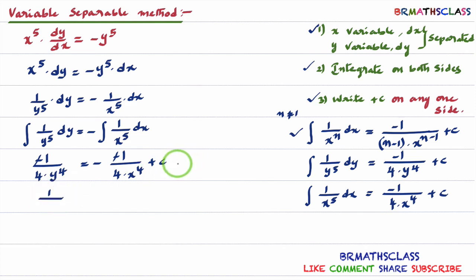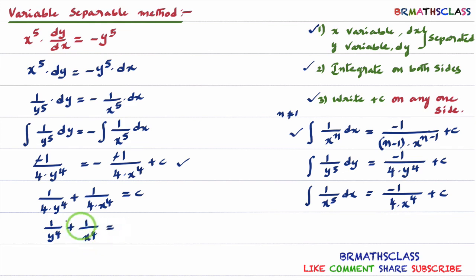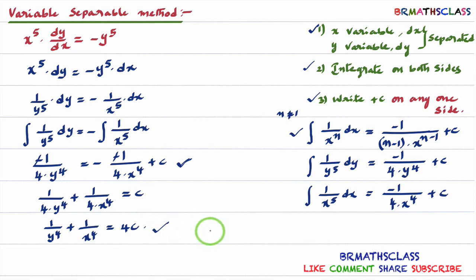Doing a little simplification: 1 divided by 4 y power 4 plus 1 divided by 4 x power 4 equals c. Taking 1 by 4 common and moving it to the right: 1 divided by y power 4 plus 1 divided by x power 4 equals 4c. This is the required general solution of the given differential equation. We solved this by the variable separable method. I hope you understand this class.